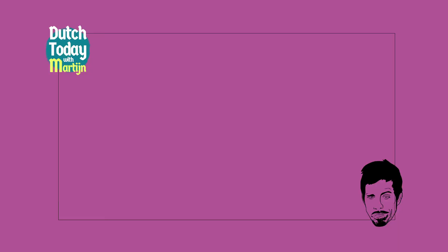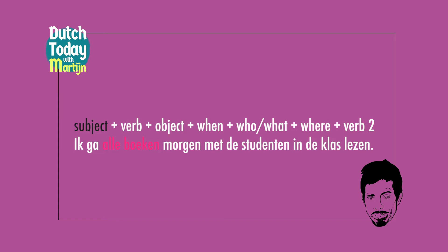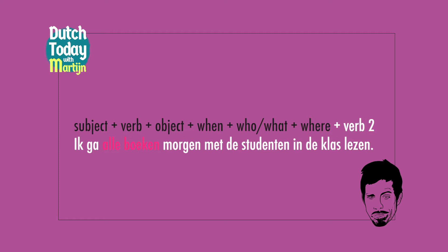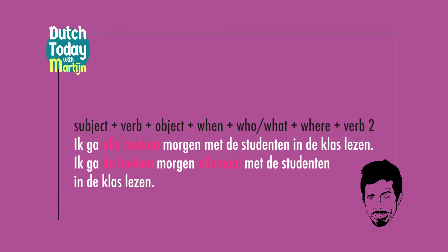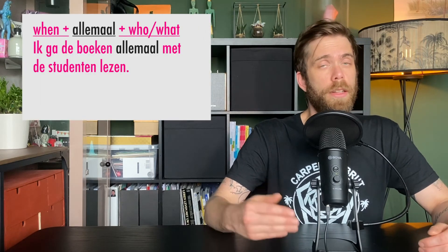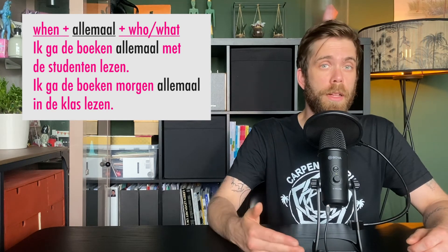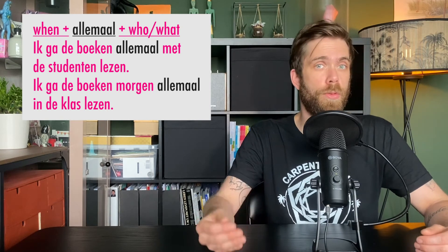Now, where can you put the word allemaal in a sentence? Let's have a quick look at the basic sentence structure: subject, verb, object, when, who or what, where, then the second verb if there is one. Ik ga alle boeken morgen met de studenten in de klas lezen. Allemaal comes between when and who or what. Ik ga de boeken allemaal met de studenten lezen. Ik ga de boeken morgen allemaal in de klas lezen. So put allemaal between where when and who or what would be.